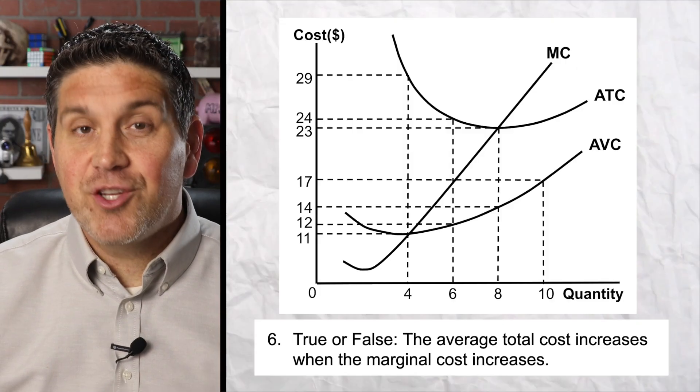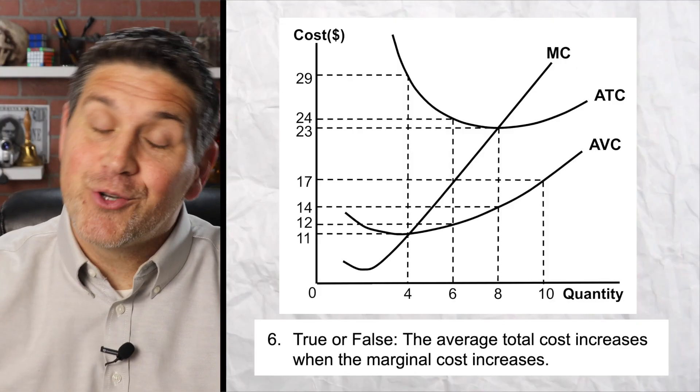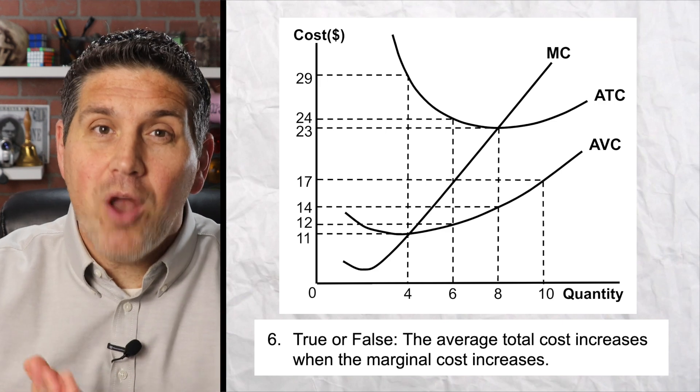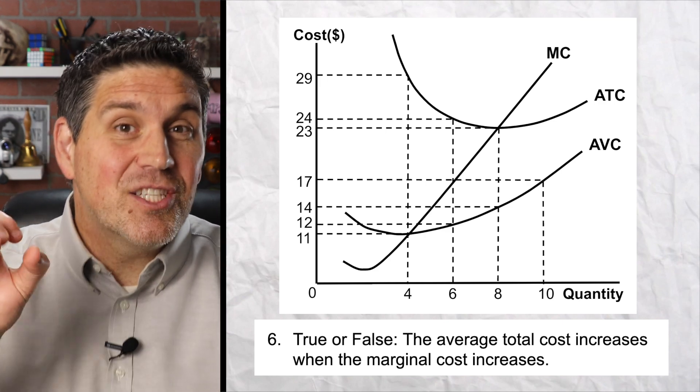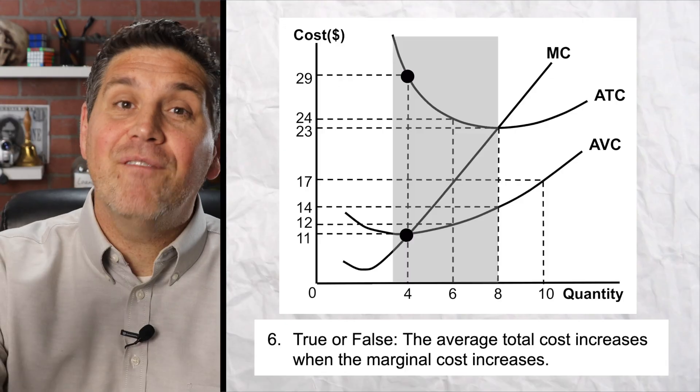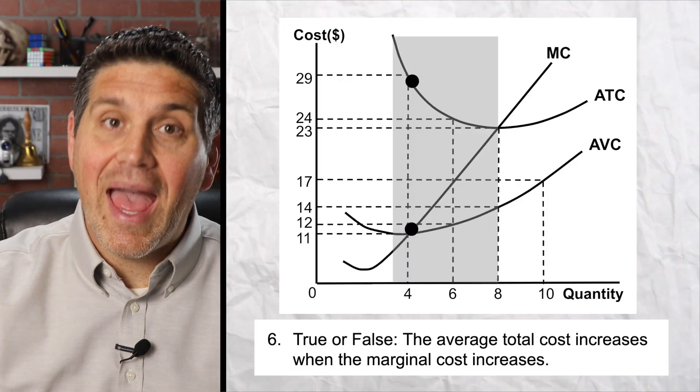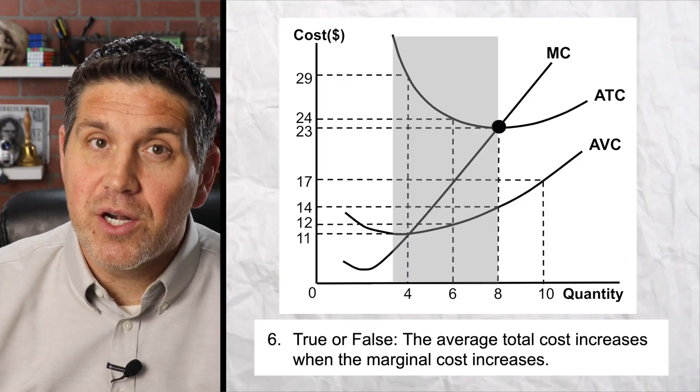Moving on to question number six, your teacher or professor won't ask you that many true false questions, but you do need to know the relationship between average and marginal. So this statement is false. This is wrong because the average total cost is falling as the marginal cost is increasing at this range here.